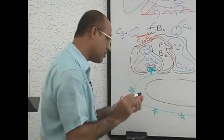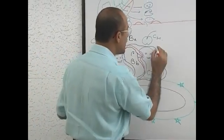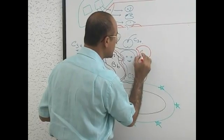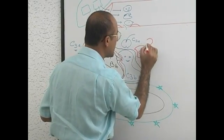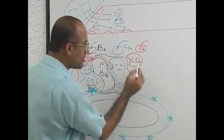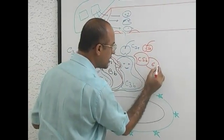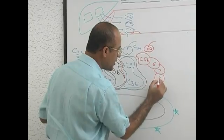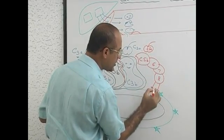And then remaining story is the same. What will bind here? C5B and what will go away? C5A. C5B, remaining story is same. 6, 7, 8, 9 going to attack.